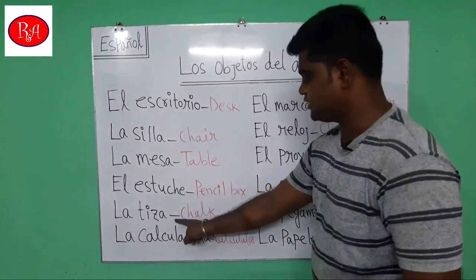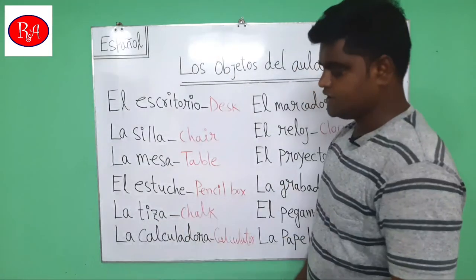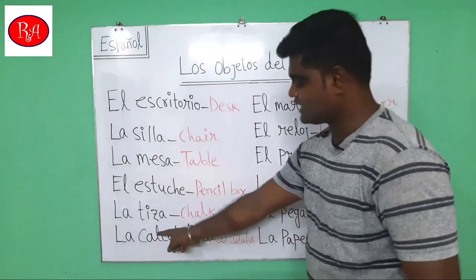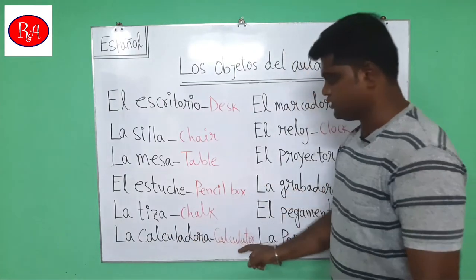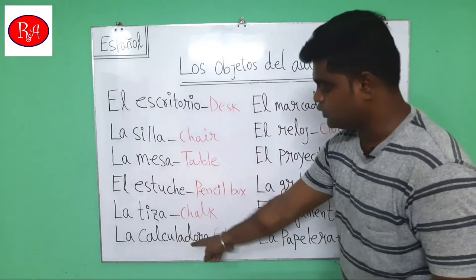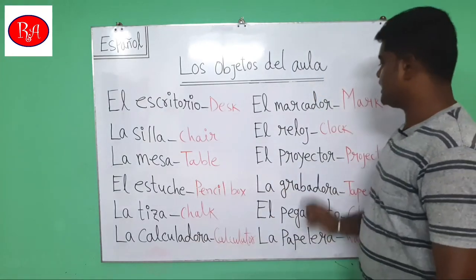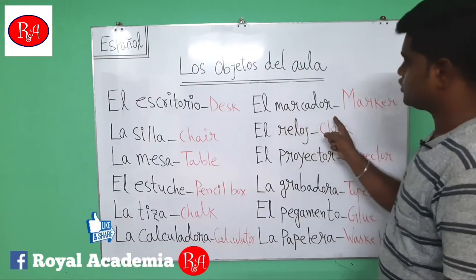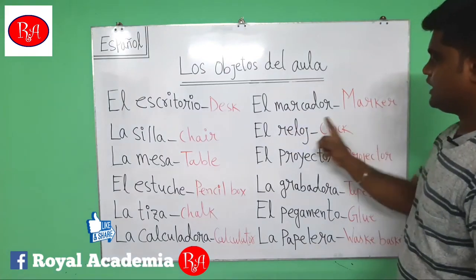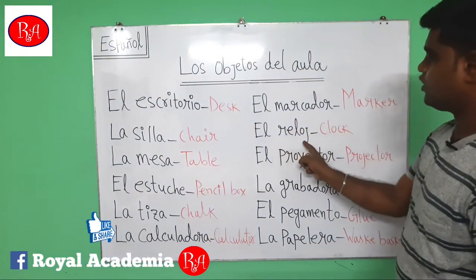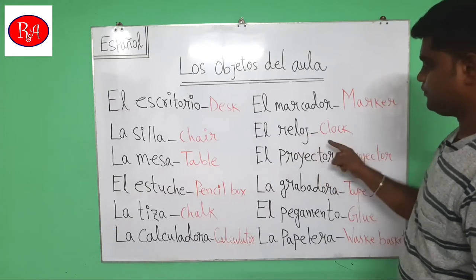La tiza — that means chalk. La tiza. Next word: la calculadora — la calculadora — that means calculator. Next word for marker: el marcador — el marcador — that means marker. El reloj — el reloj — that means clock.